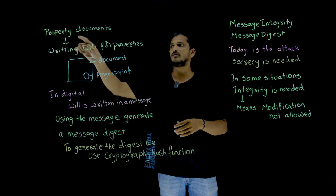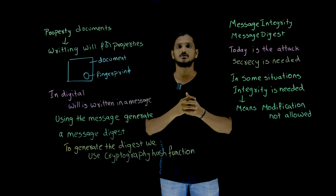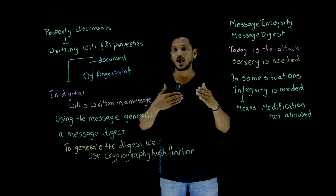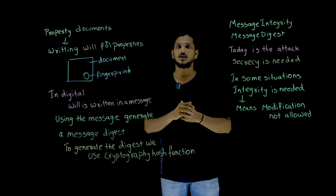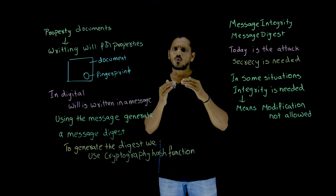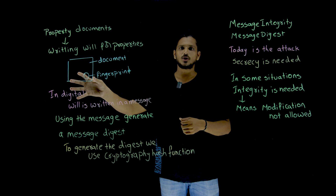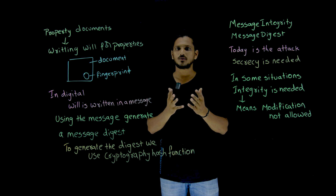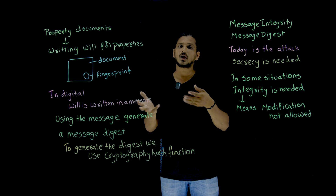For example, if you are having a property document and you are writing a will, lawyers and no one should be allowed to modify the message. This will should not be modified. In that situation, we need to maintain Message Integrity. In reality, you write the will in a document and put a fingerprint on it, so that after death, no one can replicate the same fingerprint values — and that is why you cannot modify the document.